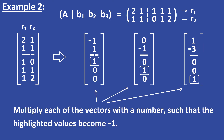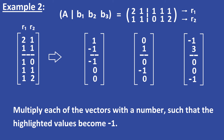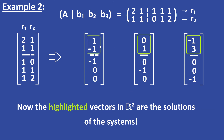Now we have to take a look at these last values. We have to multiply each of these vectors with a number such that these values become minus 1. In our case we have to multiply each vector with minus 1. Now these values have become minus 1, and the vectors above the dashed lines are the solutions of the systems. This is the solution of the first system, this is the solution of the second system, and this is the solution of the third system.